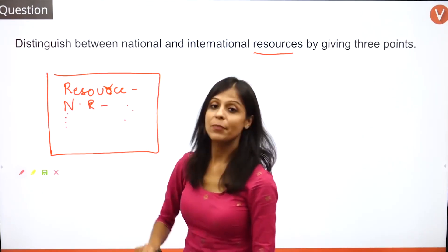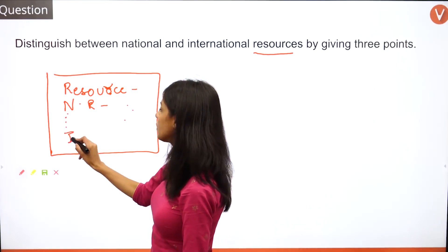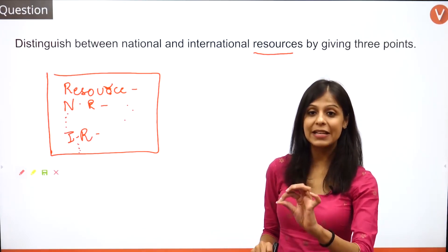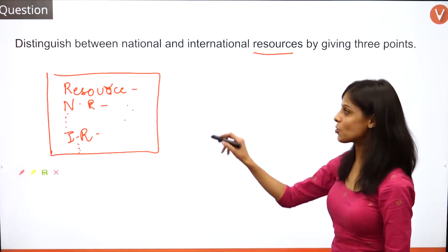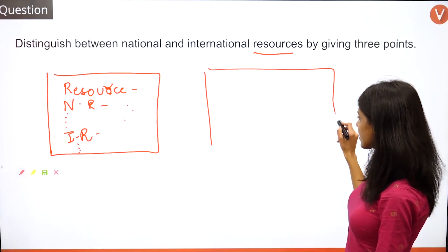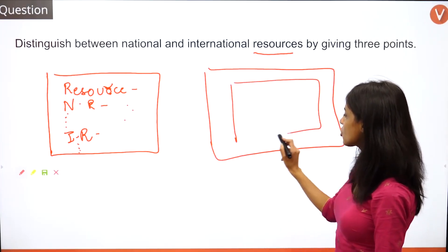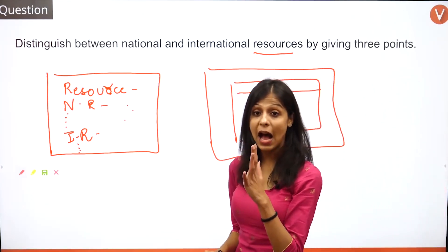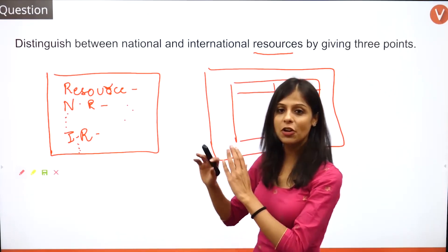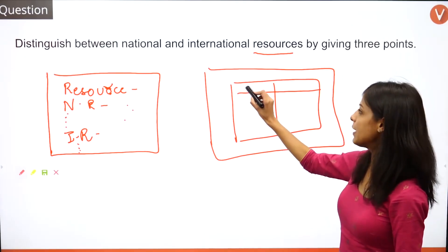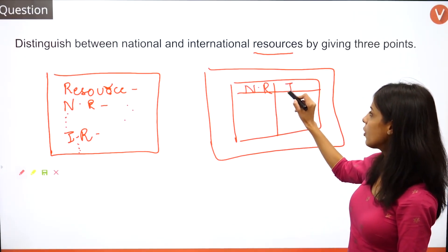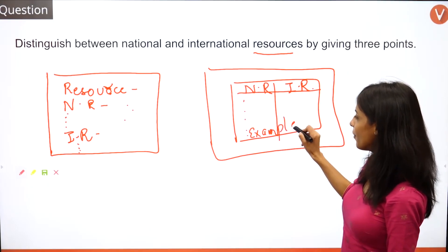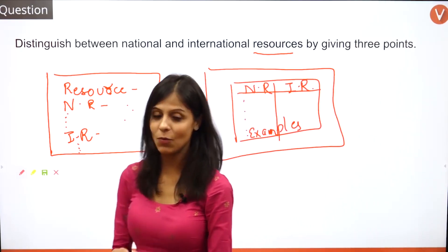After giving the definition of resource, either talk about national resources with bullet points, leave a space, then talk about international resources with bullet points. That's the first option. The second way to resolve this is to put points across to the teacher in a tabular format, distinguishing them side by side — with a column for national resources and a column for international resources — and then mention relevant points with good examples.